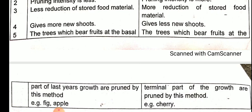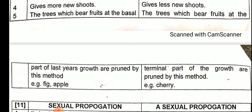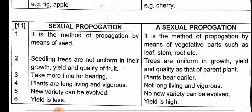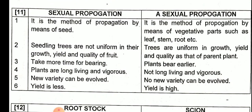In heading back, trees which bear fruits at the terminal part of the growth are pruned by this method — where more fruits are at the terminal portion. For example, thinning is used for fig and apple, while heading back is used for cherry.